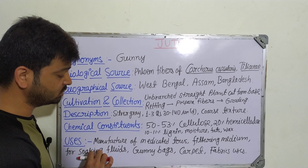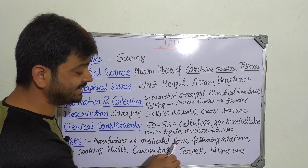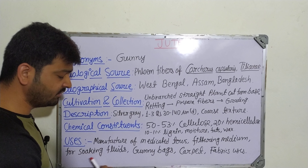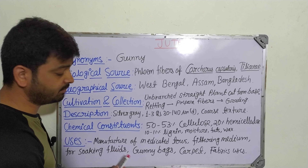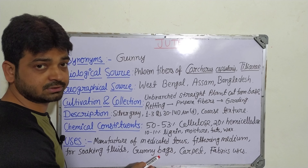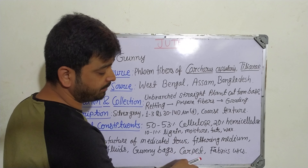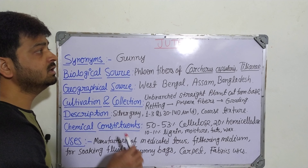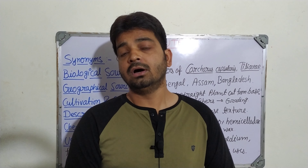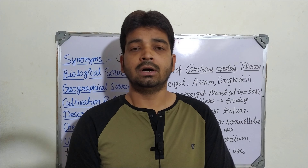Coming to the uses — what are the applications in pharmacy or pharmaceutical science? It is used in the manufacture of medicated tow. It is also used as a filtering medium and for soaking different liquids during formulation and manufacture. Gunny bags can be prepared, which are useful for transportation of crude drugs and other pharmaceutical aids. Carpets and fabrics can also be prepared. Jute is a very famous plant fiber with lots of industrial uses and applicability in both pharmaceutical and textile industries.